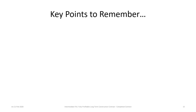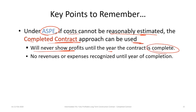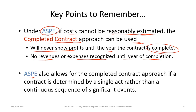Let's talk about some points to remember. Under ASPE, if costs cannot be reasonably determined, the completed contract approach may be used, and under this approach we will never show profits until the year the contract is complete — no revenues or expenses are recognized until that year. Second, ASPE allows the completed contract approach if a contract is determined by a single act rather than a continuous sequence of significant events, such as a simple contract rather than something complex like a bridge or road with overlapping elements.